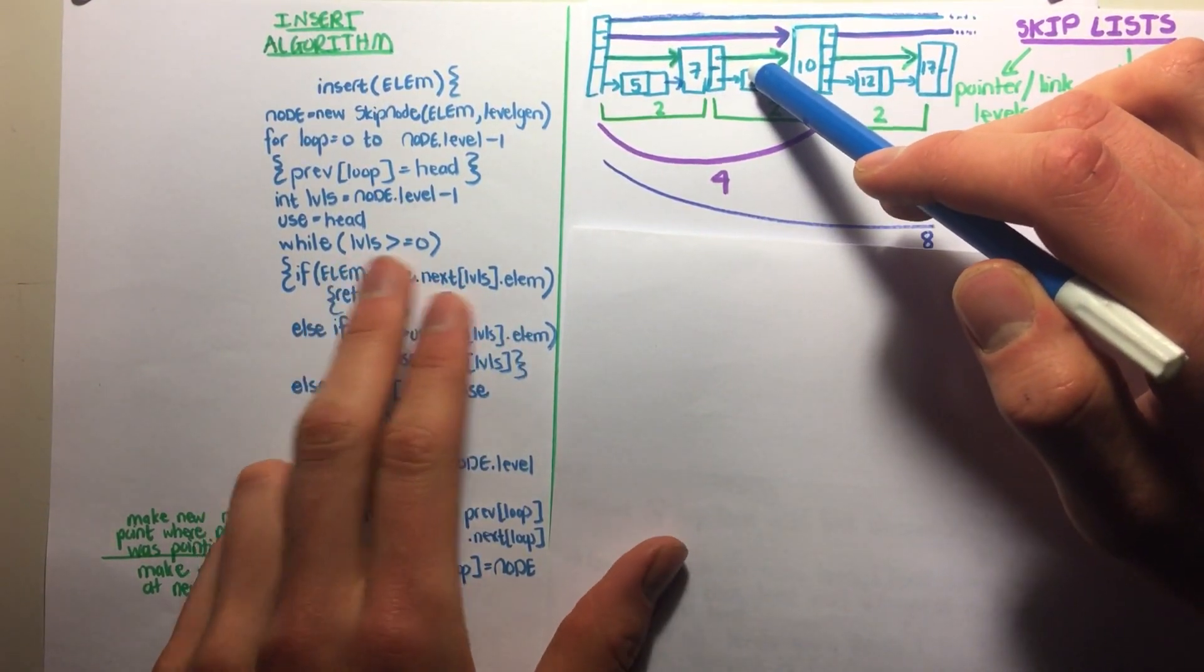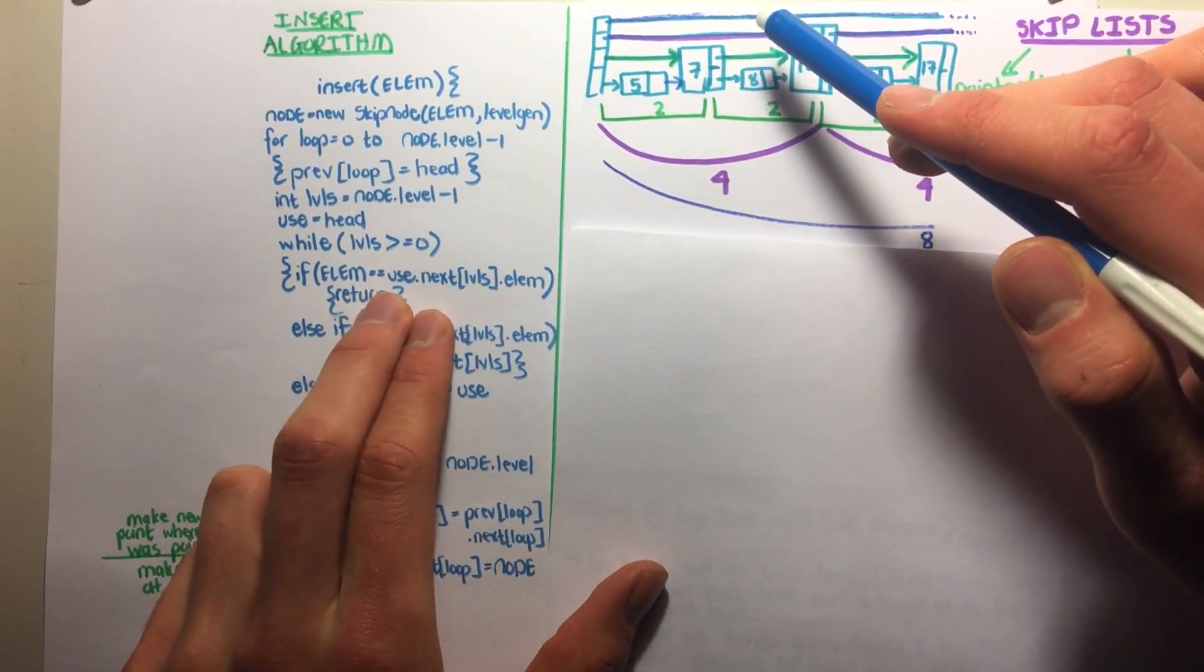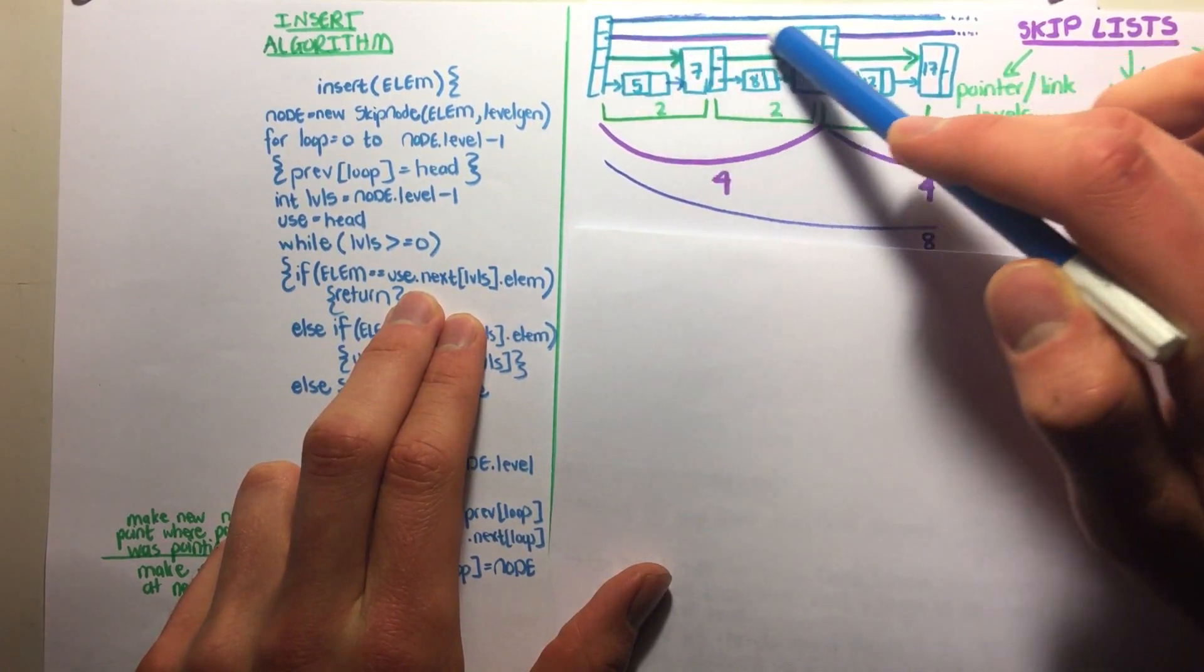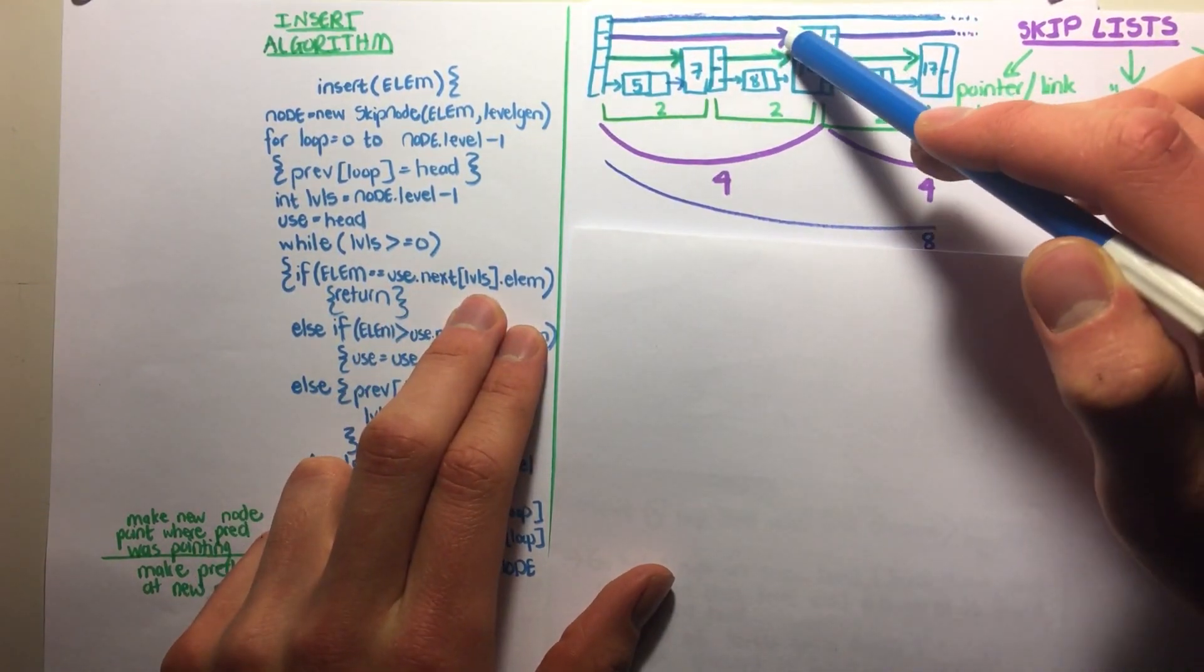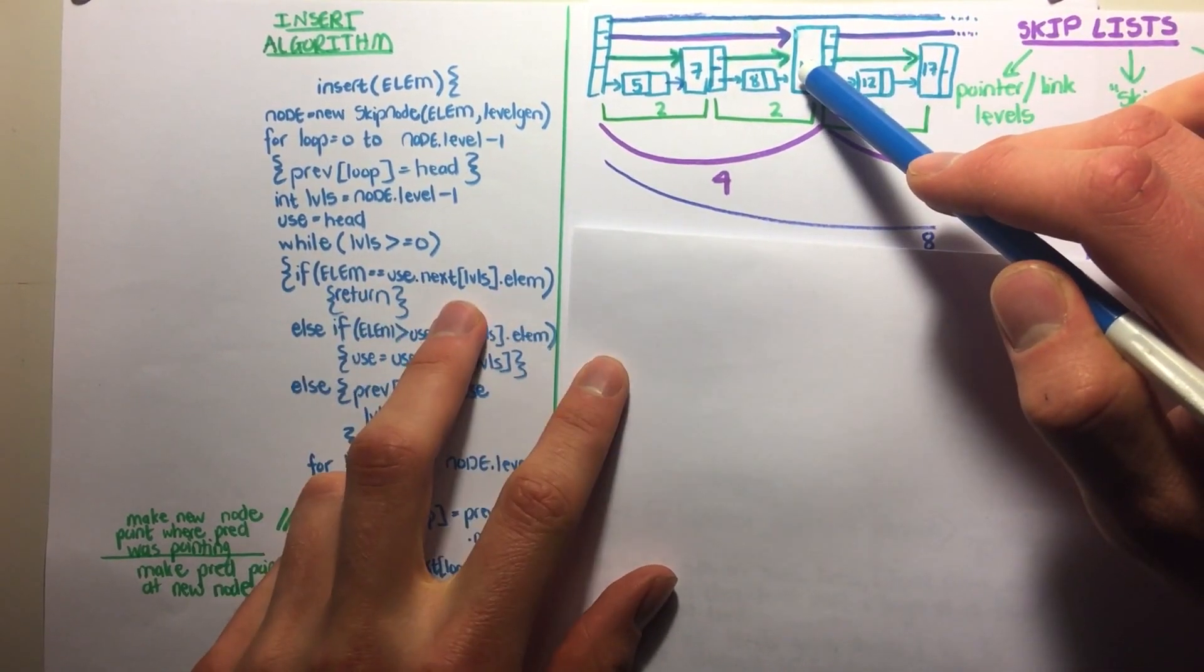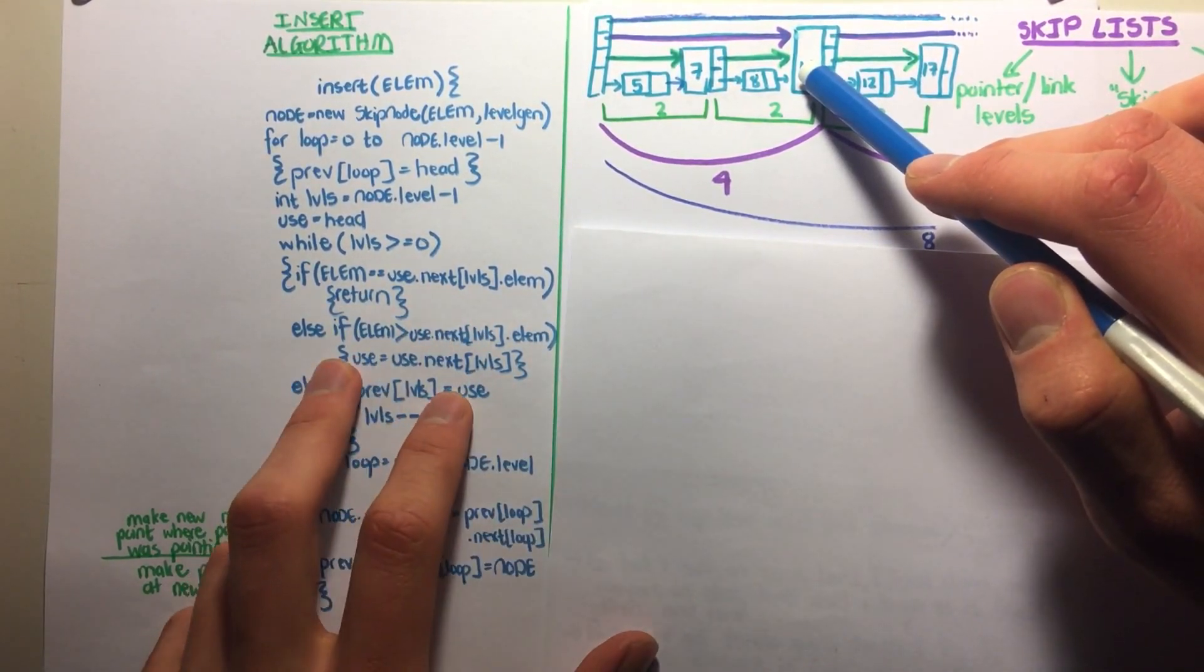So now we say while levels are greater than 0, if the number 9 is equal to use dot next at that level, the element at that level is number 10. So is 9 equal to 10? No. Then we go on.